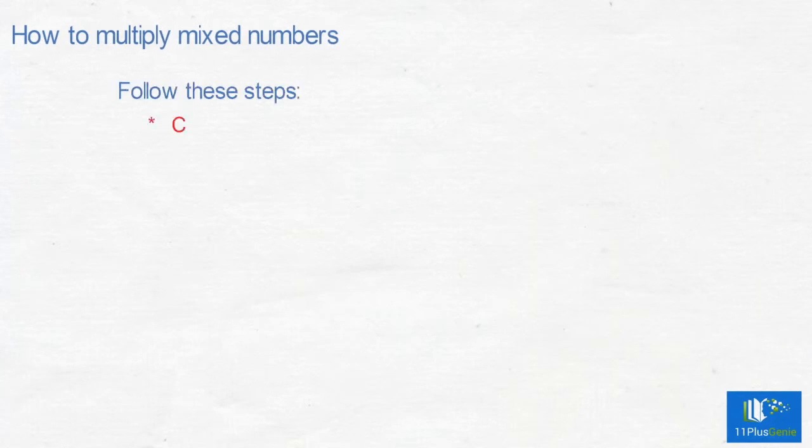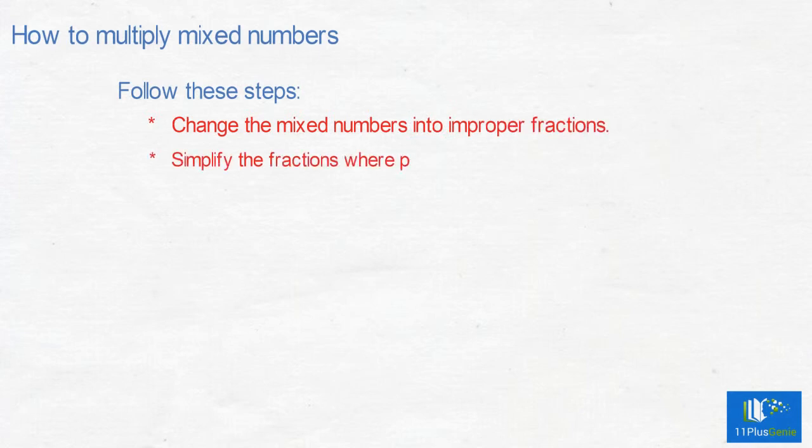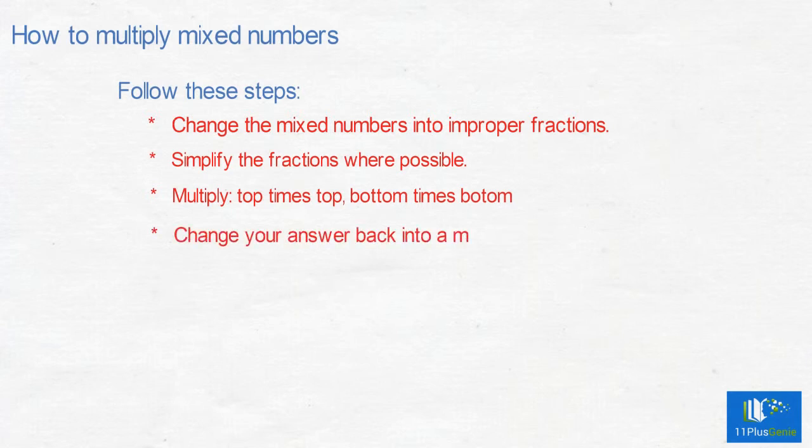How to multiply mixed numbers? Follow these steps. Change the mixed numbers into improper fractions. Simplify the fractions where possible. Multiply top times top, bottom times bottom. Change your answer back into a mixed number.